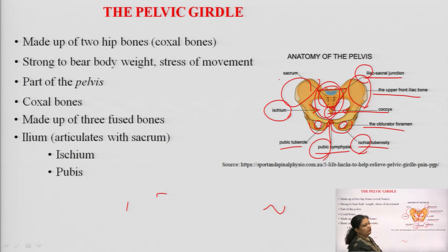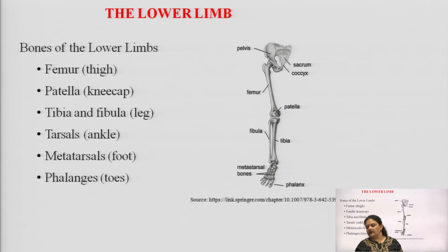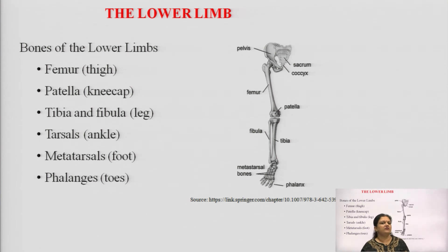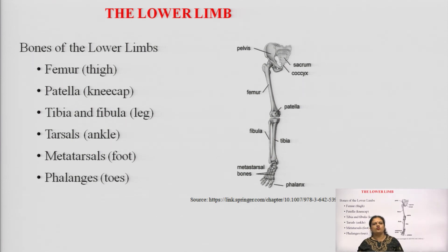In an adult, the complete pelvis comprises three sets of fused bones: the ilium, ischium, and pubis. Coming to the lower limb, the bones of the lower limb comprise the femur — the thigh bone and longest bone — then the patella, which is the kneecap. After that we have two bones: tibia and fibula. Same as in the hand we have radius and ulna, in the leg we have tibia and fibula.